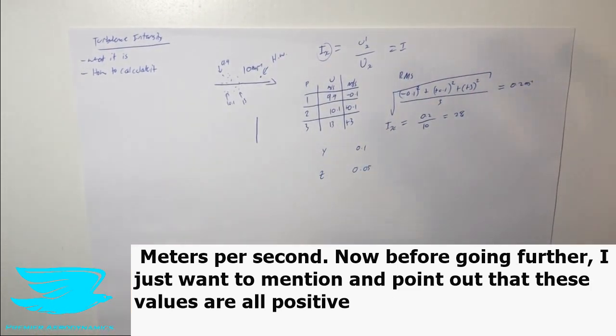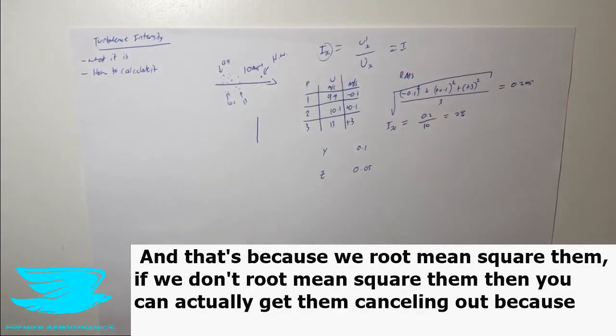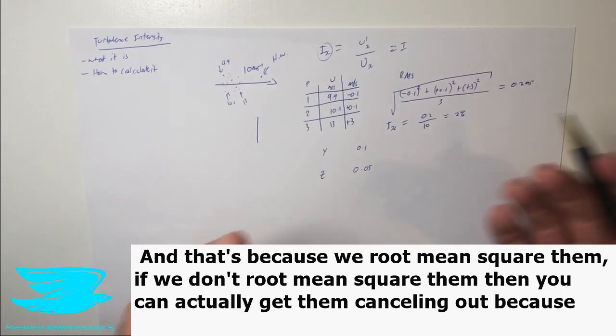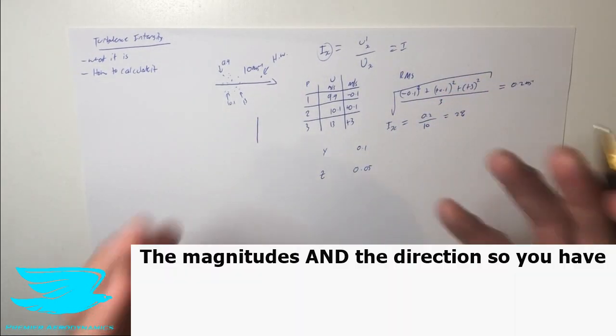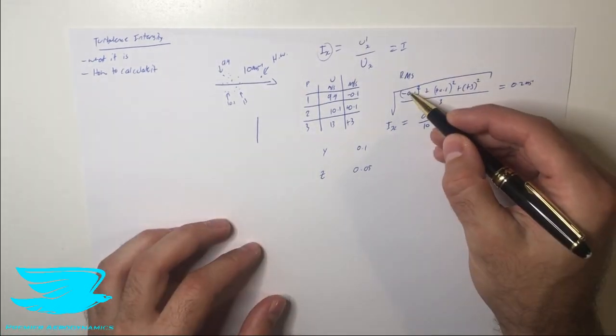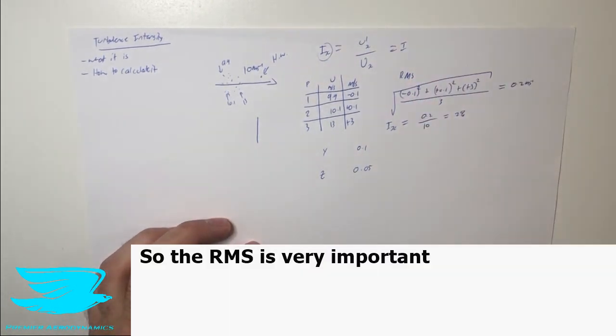Now before we go any further, I just want to mention and point out that these values are all positive, and that's because we root mean square them. If we don't root mean square them, then you can actually get values cancelling out, because we're not looking at the absolute values, we're looking at the magnitudes and the directions. So you have a vector here, minus and positive, they can cancel out and give you nothing. So the RMS is very important.